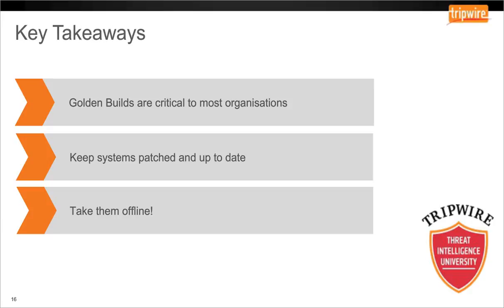Number one: golden builds are critical. A lot of companies see golden builds as useful but not critical, or if they do, they find that they are not using them as effectively as they could. I would recommend spending some time making sure your processes are in place and working in line with your current business processes.